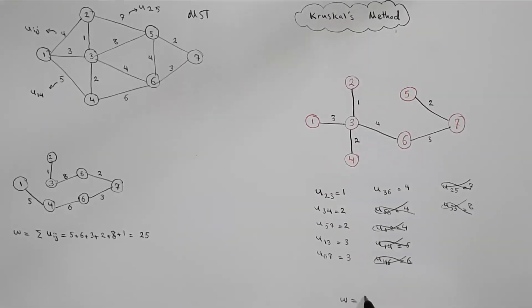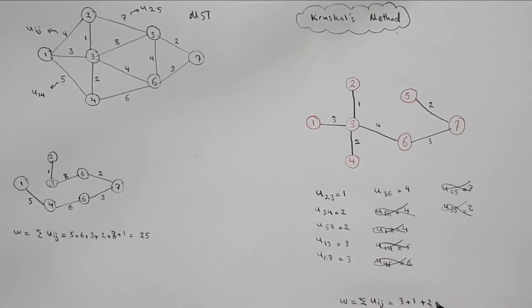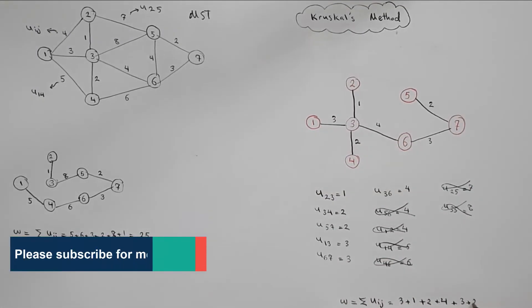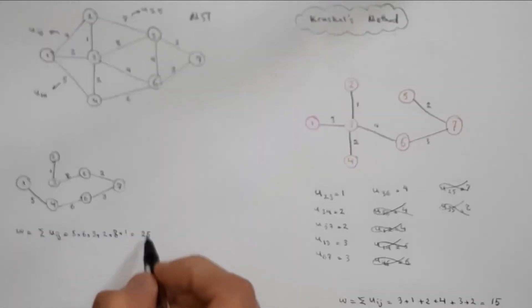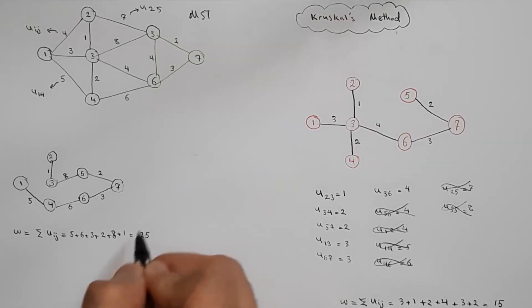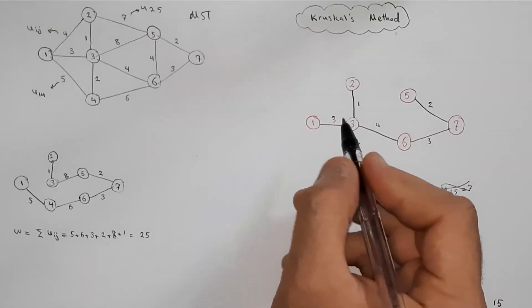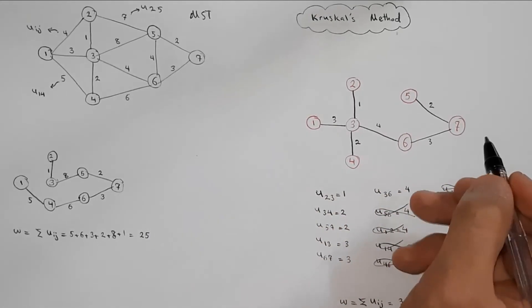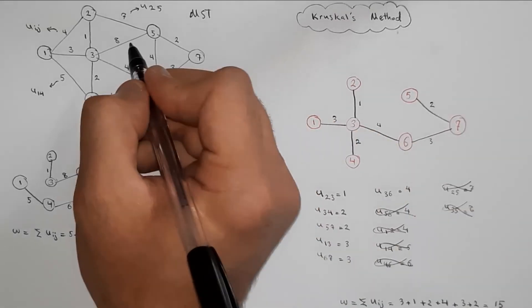So here is our minimum spanning tree. Let's calculate the summation of its weights — 3 plus 1 plus 2 plus 4 plus 3 plus 2 — which equals 15. And you can see that it is much less than 25 — it is drastically lower. So this is the minimum spanning tree — a tree whose summation of weights is minimum. This is the MST for this undirected graph.